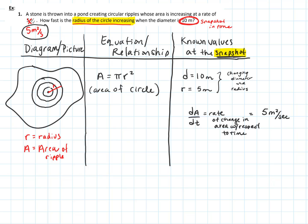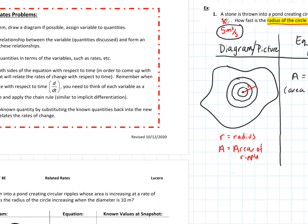So how do we connect this? Under my known values, I'm also going to put in an unknown value. After listing everything you know, it's worth also writing what you're actually looking for, so your eye is focused on it. What we're looking to find is dr/dt — the rate of change in the radius. The question was how fast is the radius of the circle increasing at that snapshot in time when the diameter was 10 meters?